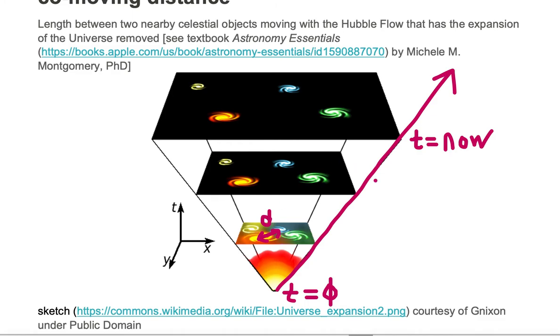As the universe ages, the Hubble flow causes the galaxies to move apart. All the galaxies are moving with the Hubble flow. Now we see the galaxies are much further apart.